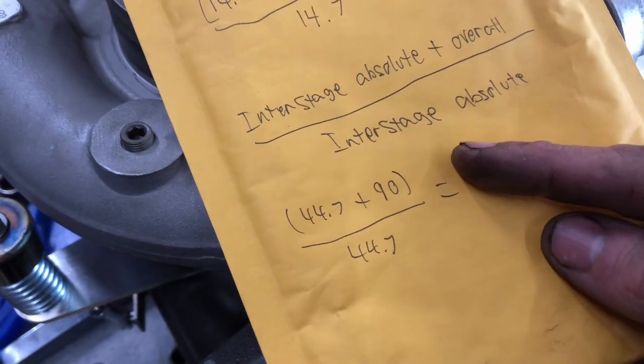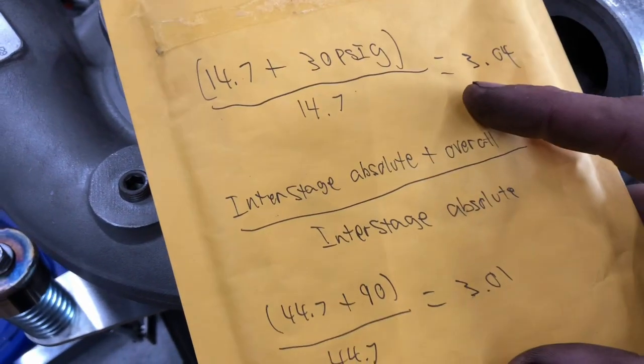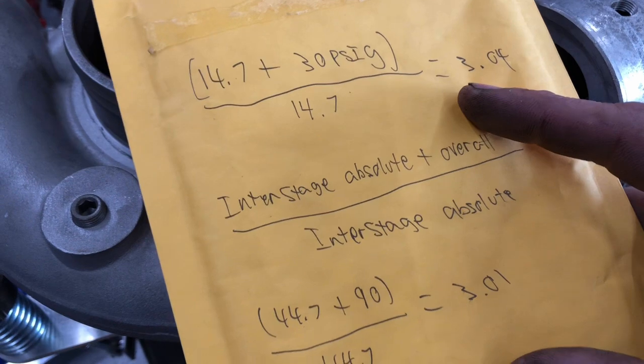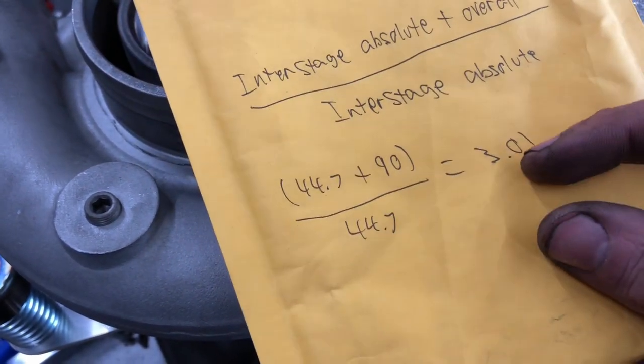So if we add 90 overall, it'd be 44.7 because it's interstage absolute, so we have 30 in the interstage, that's G, that's 44.7 plus 90 divided by 44.7, 3.01.